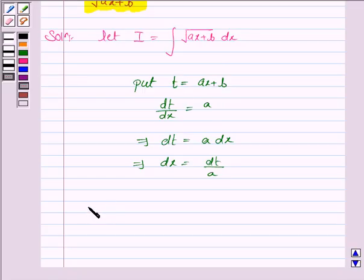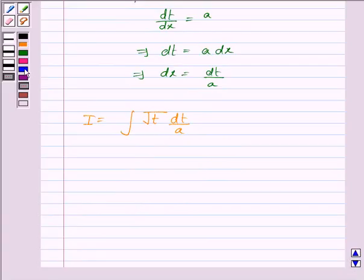So substitute all these values. So I becomes integral root t dt by a, and this is again equal to 1 upon a integral of t to the power 1 by 2 dt.